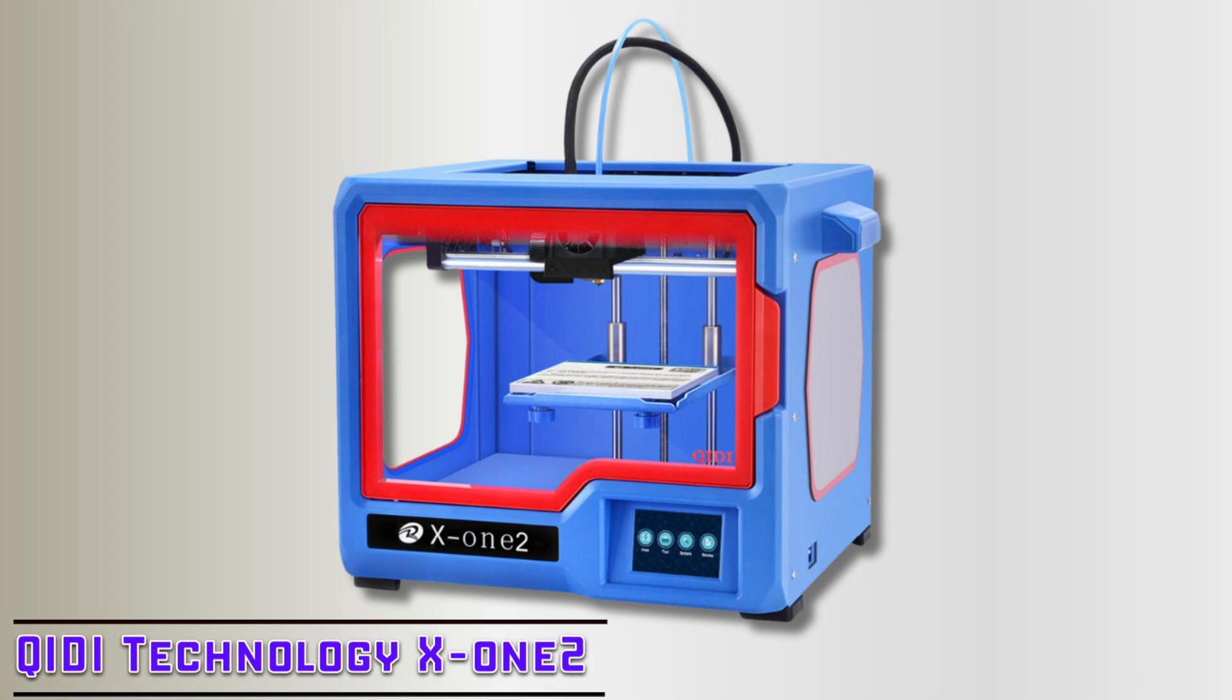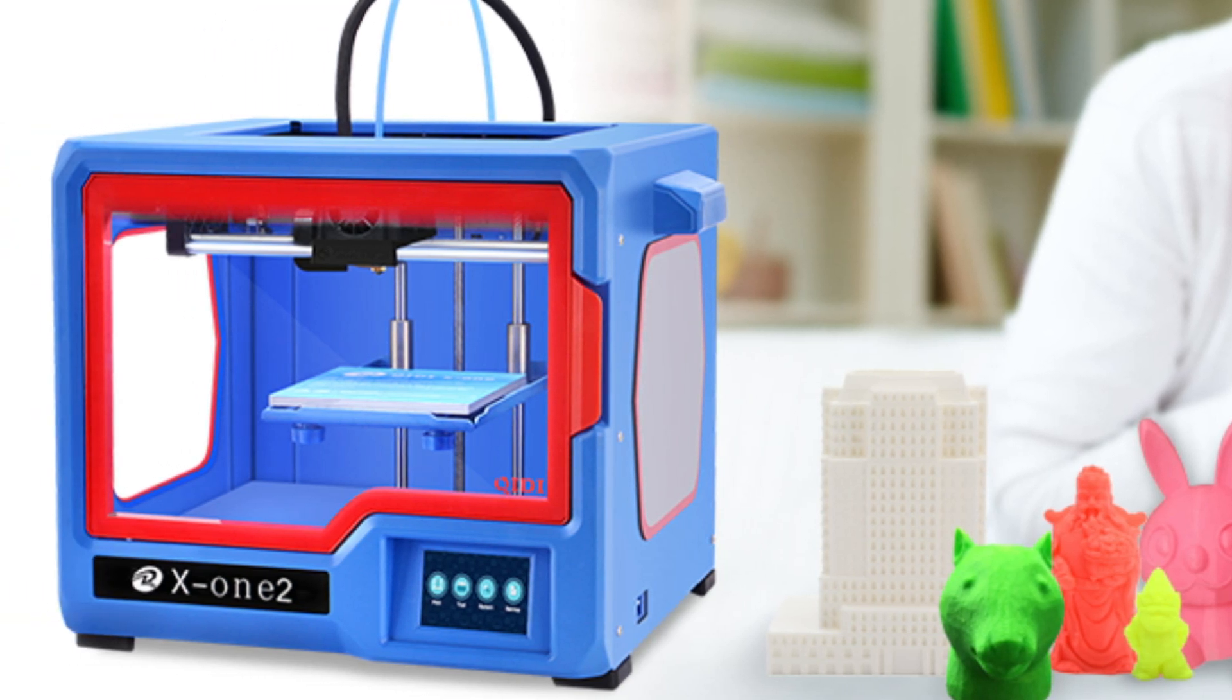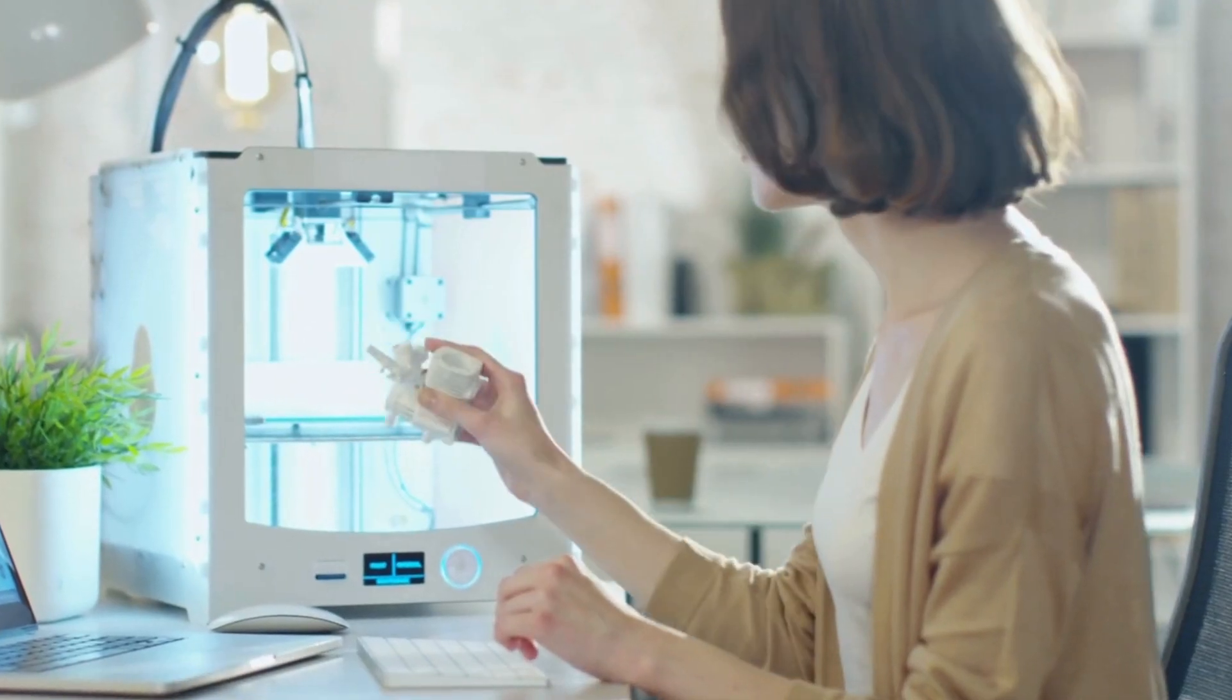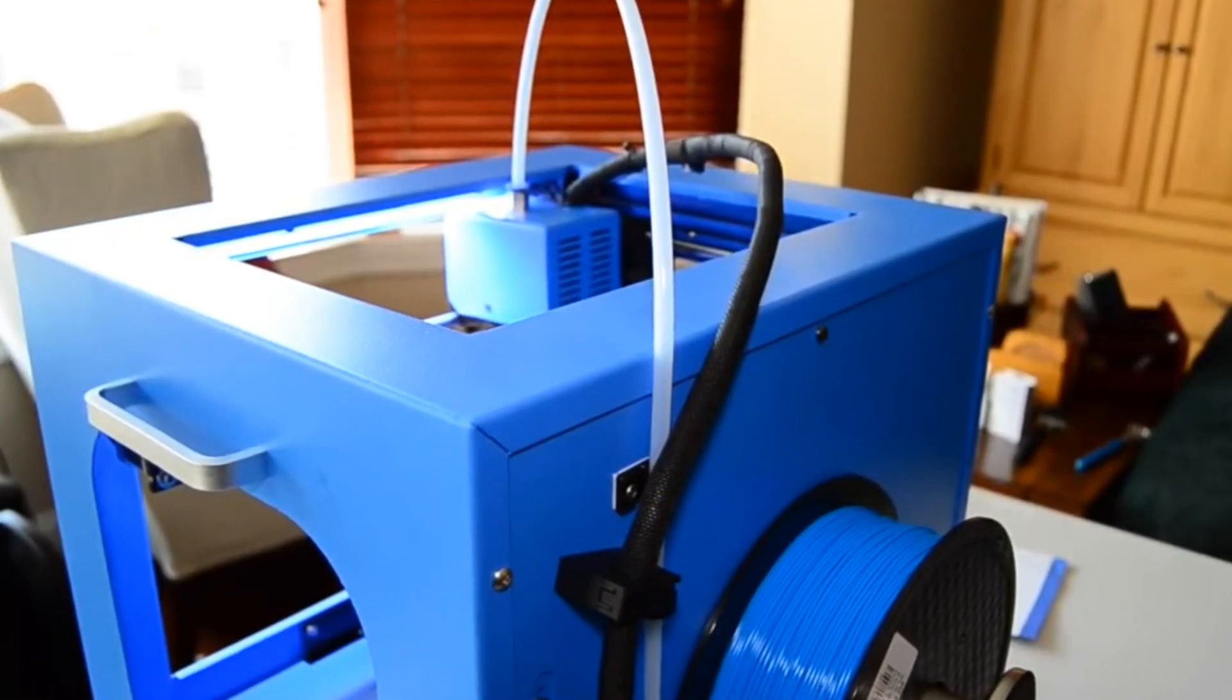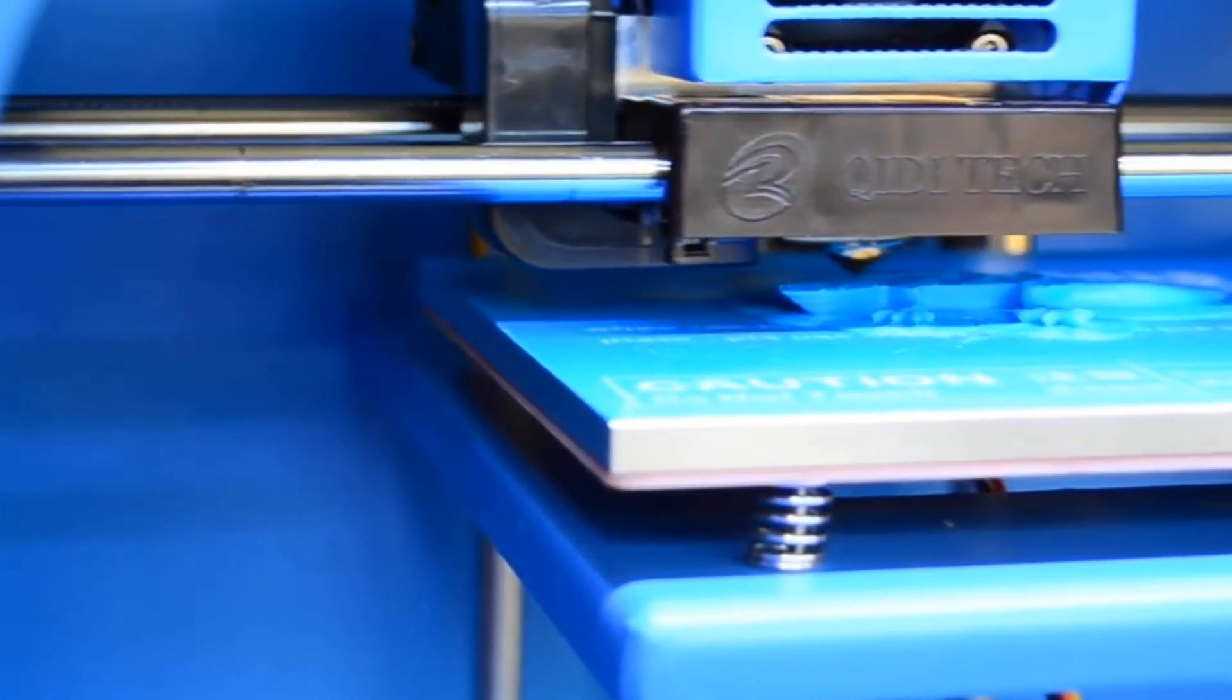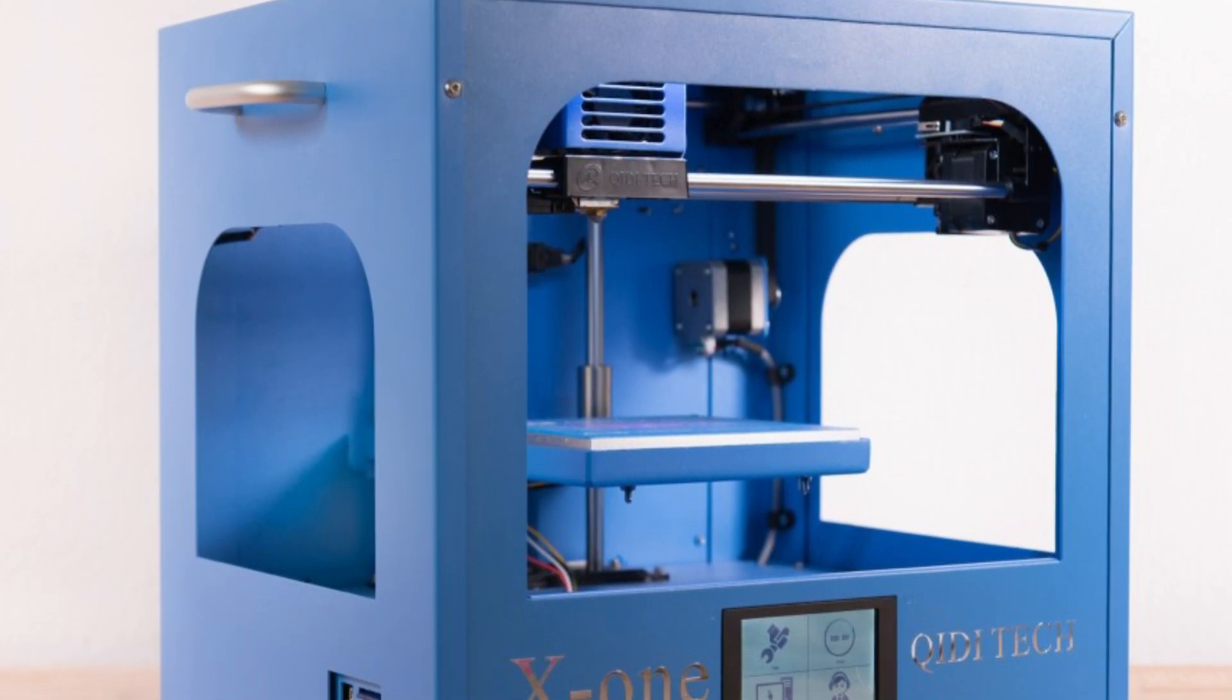At number 5 is the QIDI Technology X12 Single Extruder 3D Printer. The QIDI Technology X12 is an excellent entry-level 3D printer, ideal for families and schools due to its ease of use and reliability. It comes fully assembled and ready to print, making it accessible for beginners and hassle-free for experienced users. Equipped with a single extruder, the X12 significantly reduces the risk of clogging, ensuring smooth and stable printing. A heated bed and metal frame enhance its durability and printing precision.